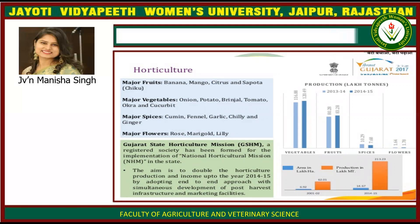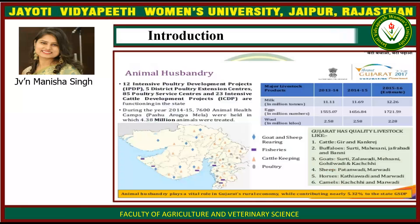Major horticulture fruits include banana, mango, citrus and sapota. Major vegetables are onion, potato, brinjal, tomato, okra and cucurbits. Major spices are cumin, fennel, garlic, chili and ginger. Major flowers are rose, marigold and lily. The Gujarat State Horticulture Mission, a registered society, has been formed for implementation of the National Horticulture Mission in the state, with the aim of doubling horticulture production and income by 2014–15 through an end-to-end approach including post-harvest infrastructure and market facilities.